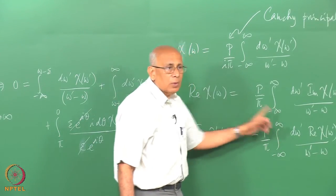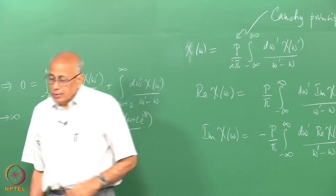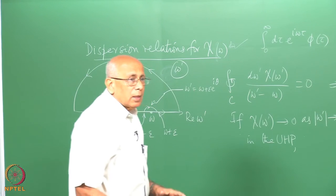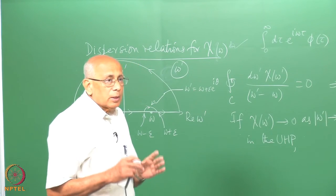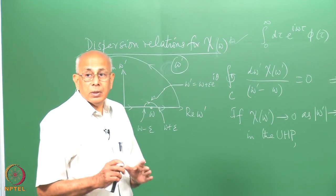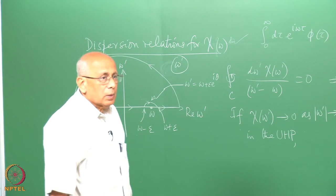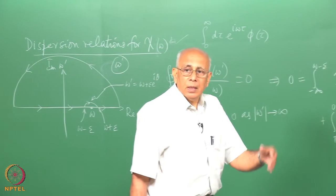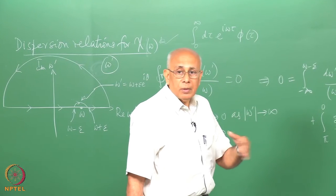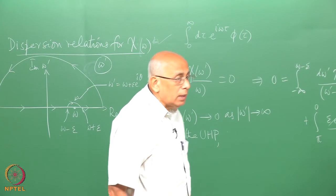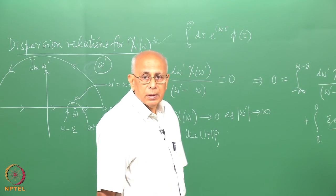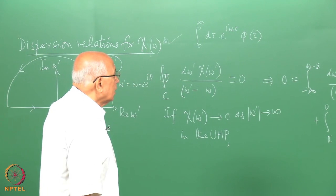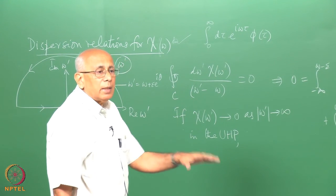The physical reason why the generalised susceptibility satisfies dispersion relations is because it is a causal response. This has profound implications in other parts of physics, especially in particle physics, quantum field theory, and anywhere dispersion relations appear. They appear in a large number of places, but finally it comes down to causality.